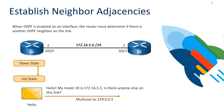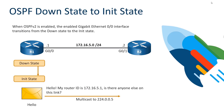We say hello to a multicast target of 224.0.0.5. My router ID is 172.16.5.1 — that's a 32-bit value from router R1 — and it asks: is there anyone else on this link? In order to stay in the init state, we need to get a response back, because right now we're going from OSPF activated, in the down state, to initialize by sending a hello.